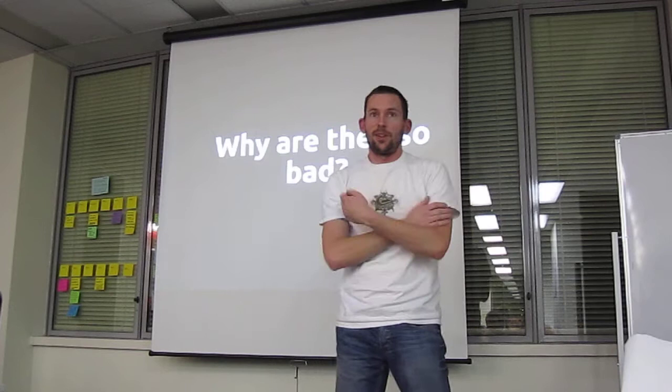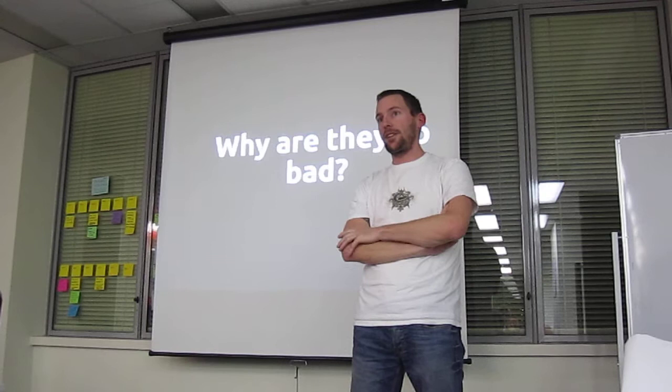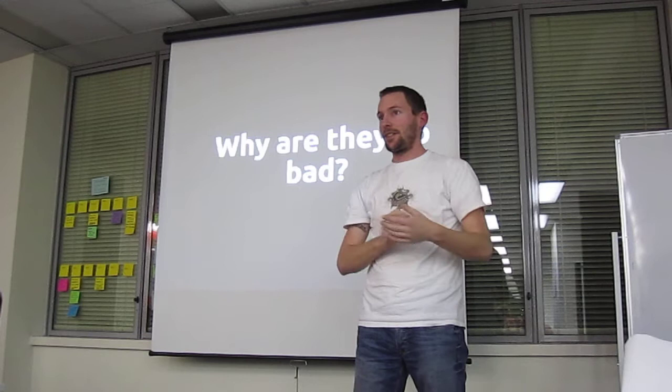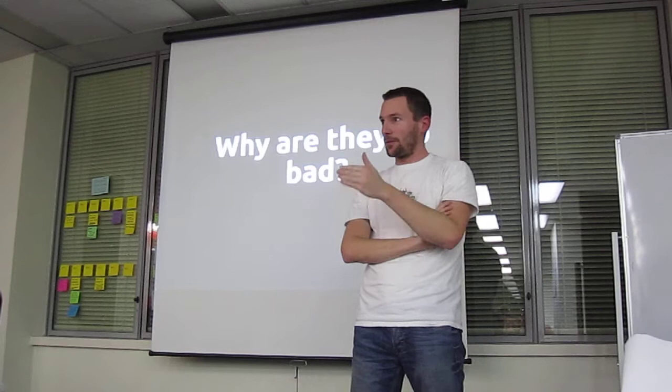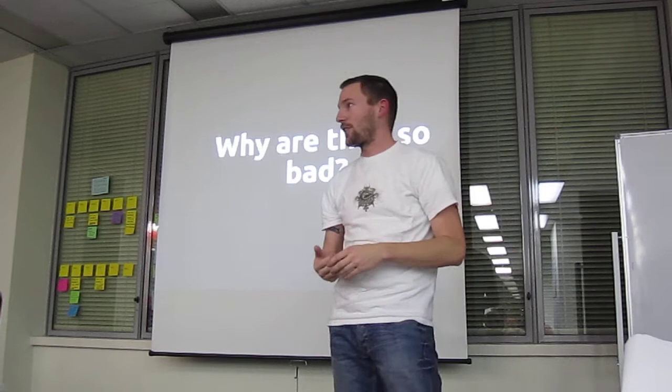So why are class variables so bad? One of the things Ruby does is when you define a class and you inherit from it, the subclasses can overwrite that variable for all the classes in the hierarchy. This is not what you'd normally expect coming from other languages, where class variables belong to a single class and inheritance doesn't overwrite them.